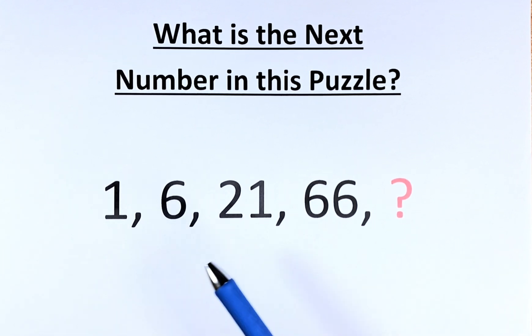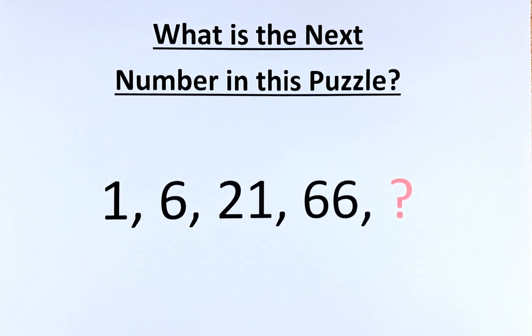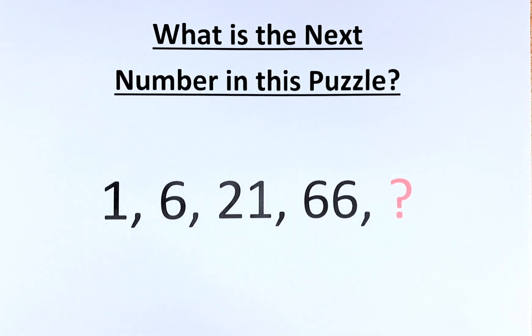So from 1 to 6, 6 to 21, 21 to 66 sounds like a multiplication. So we will try that. 1 to 6 is 6, 6 to 21, there's no such number. Maybe a decimal or a fraction. So what we are going to do, the answer is this.